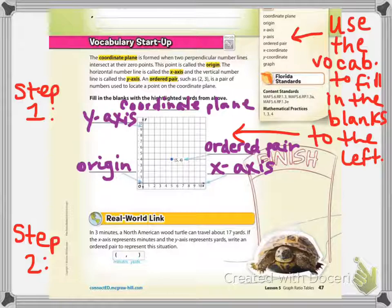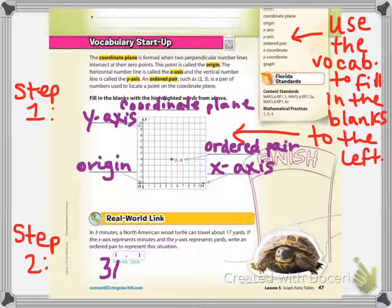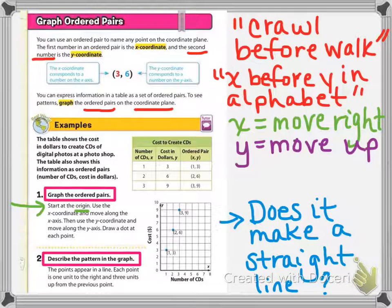Check your work. Make sure you have the vocabulary in the correct place. Looking at the real world link, in three minutes a North American wood turtle can travel about 17 yards. If the x-axis represents the minutes and the y-axis represents the yards, write an ordered pair to represent this situation. So three would be the minutes and it goes here, and the 17 yards goes in the second blank. Okay, ready then move on. If not, pause here and copy everything down.